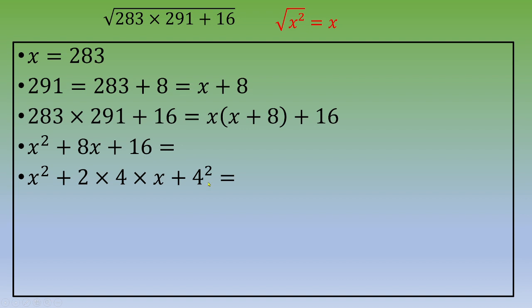By writing this, you recognize the remarkable identity: a squared plus 2ab plus b squared—this is (a plus b) squared.